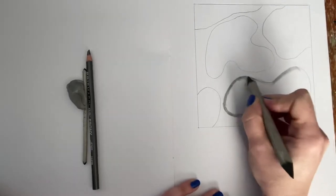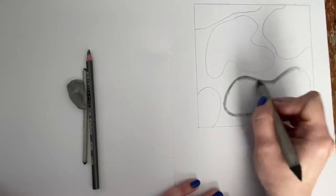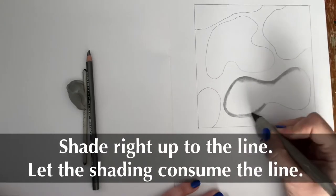I'm trying to get rid of the line, as always. I'm trying to have my shading consume the line.